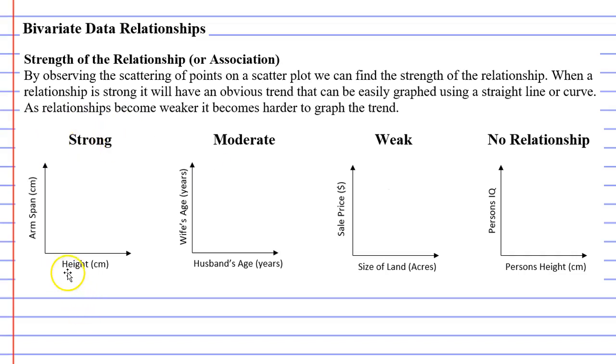We mentioned earlier that sometimes we have a line of best fit, like so. Height and arm span have a strong correlation because when we have our scatter plot, all the points will be really close to the line that will follow this pattern quite well. None of the points deviate far from the line that we've drawn.